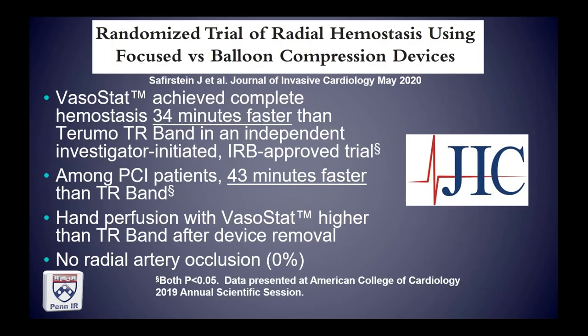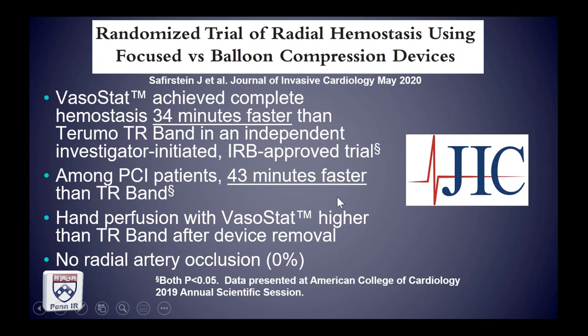During development, randomized trials were done. Compared to the market leader, the VasoStat achieved complete hemostasis 34 minutes faster than the Terumo device — in both diagnostic and interventional patients — and among patients undergoing cardiac catheterization with intervention, nearly three-quarters of an hour faster than the TR band.